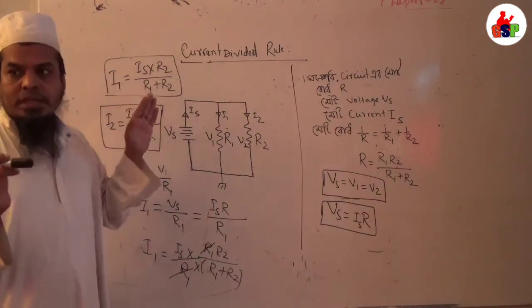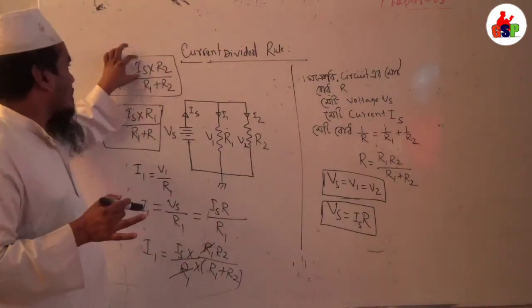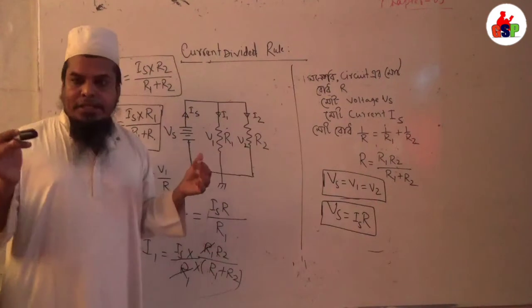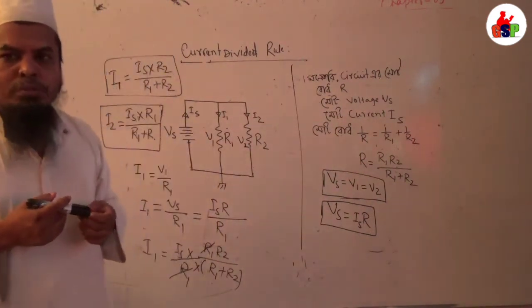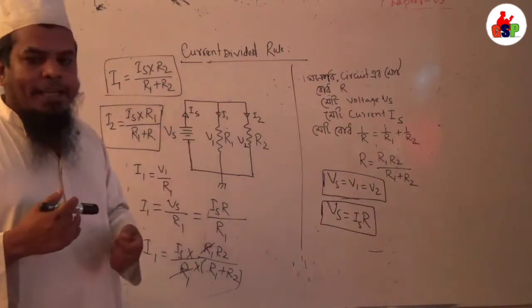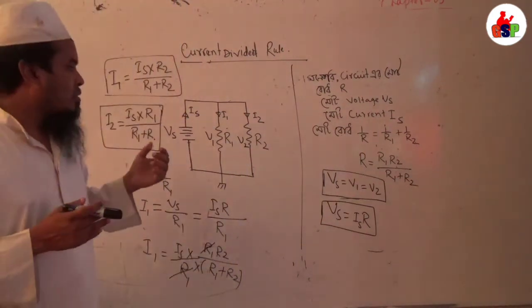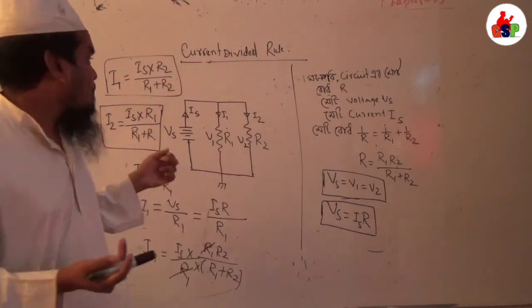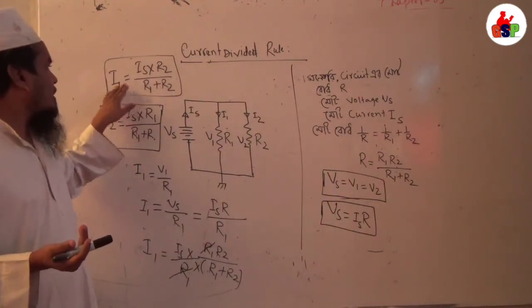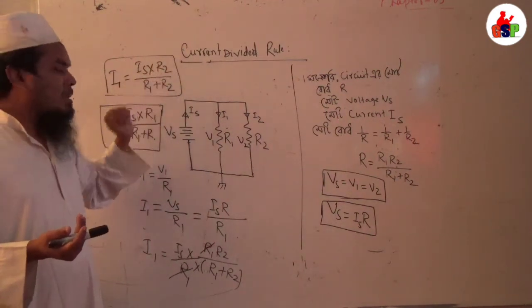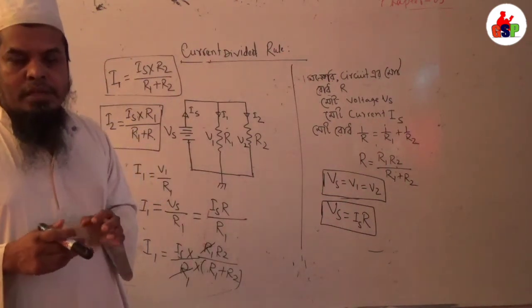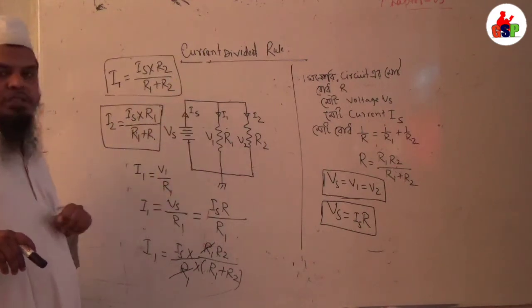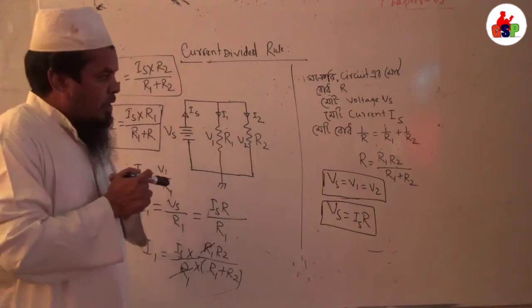This is the current branch. The current is in the opposite resistance. Now, we have to consider the two branches of the branch, but for the current divided rule, we have to consider the two branches only. We have to consider the two branches of the branch.